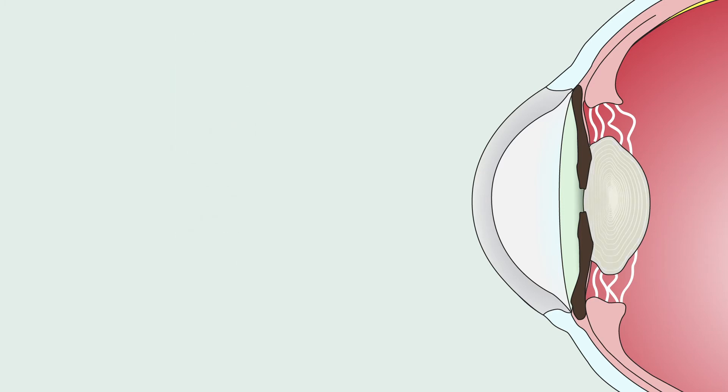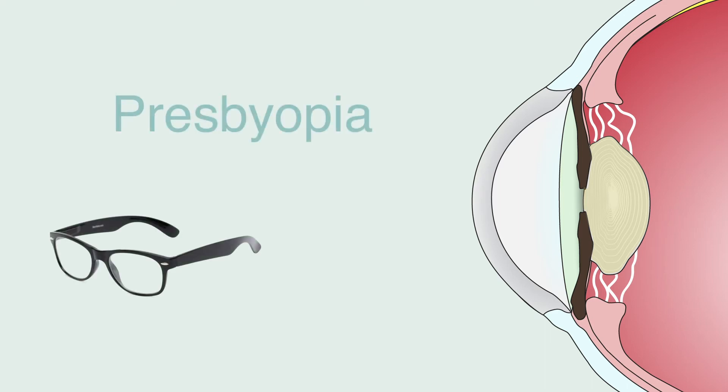As we age, the elasticity of our lens decreases, making it harder for our lens to accommodate its size. This condition is what we call presbyopia. Bifocal glasses and or contacts are commonly used to help our eyes see appropriately.